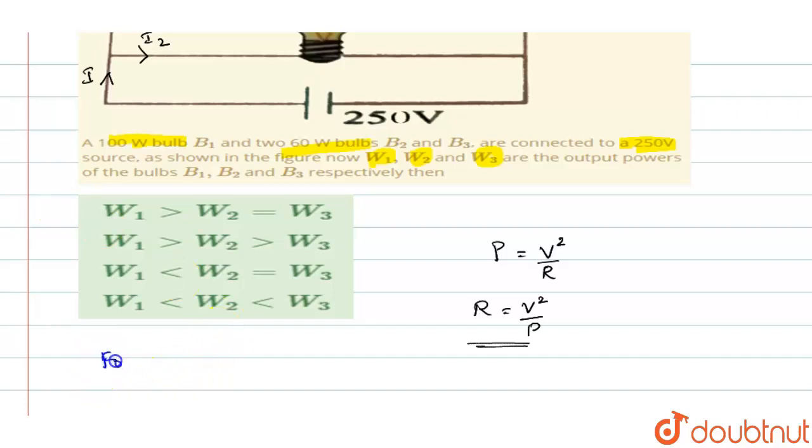For 100 Watt bulb first, R will be equal to V. V is same, it is 250 square divided by power is 100. We shall call this as equation 1.